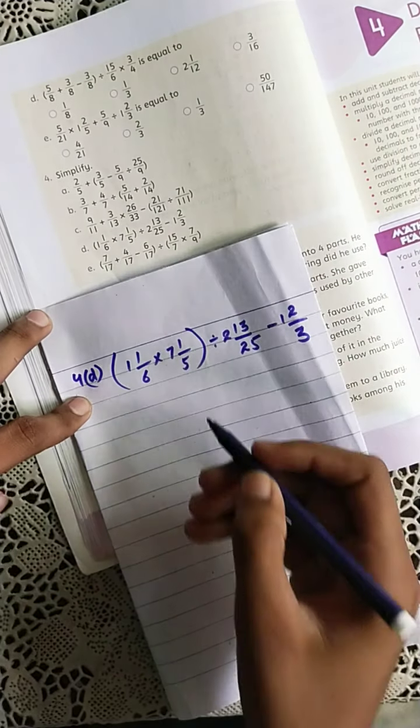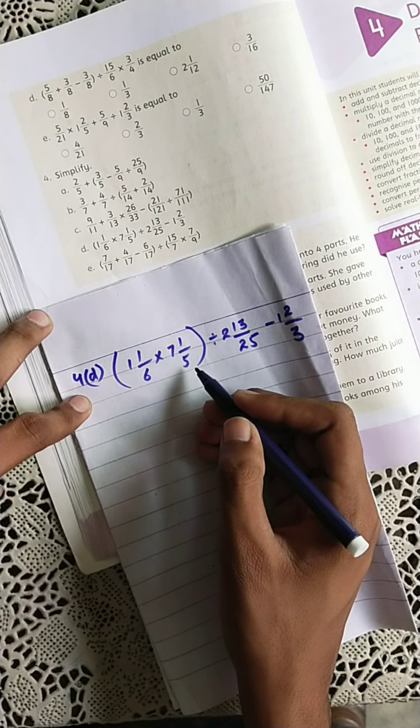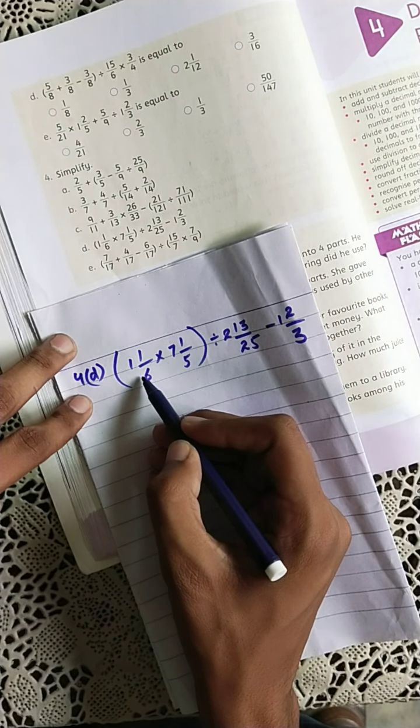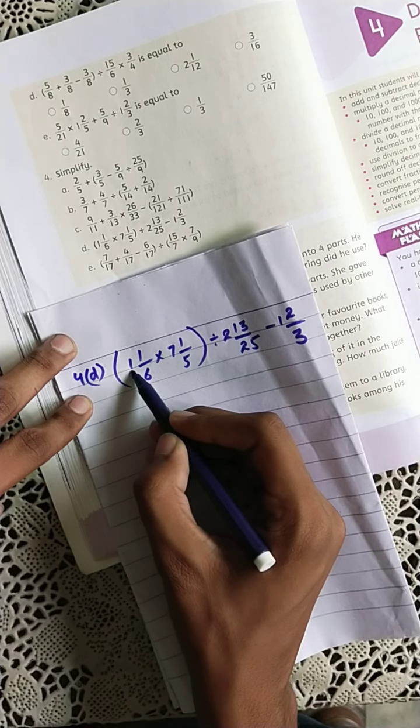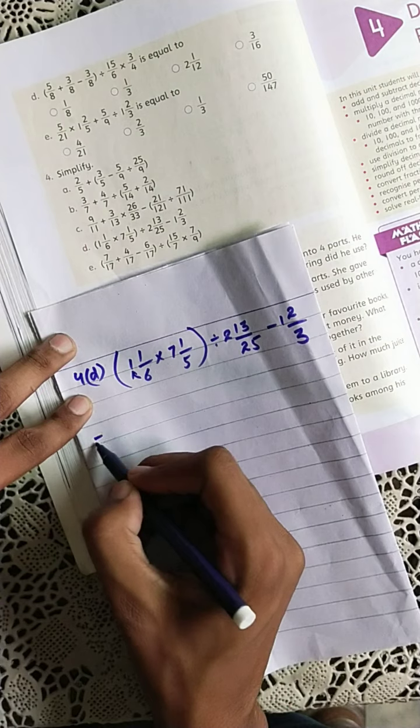So students, we have this question. We have to solve the bracket part first. First of all, we have to convert the mixed fraction into a simple fraction. What is the method? We have to just multiply the denominator with the whole number and then add the numerator in it.